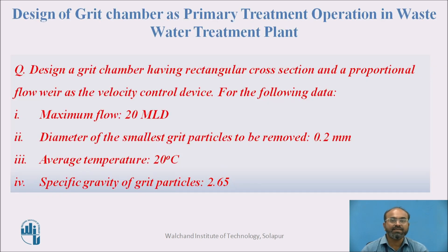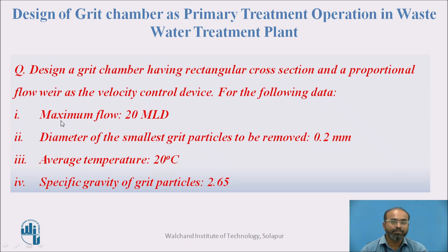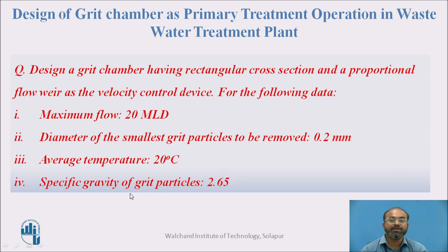Now let us see one design example of a grit chamber. Design a grit chamber having a rectangular cross-section with a proportional weir as the velocity control device for the following data: maximum flow rate is 20 MLD, diameter of the smallest grit particles to be removed is 0.2 mm, average temperature of sewage is 20°C, and specific gravity of grit particles is 2.65.